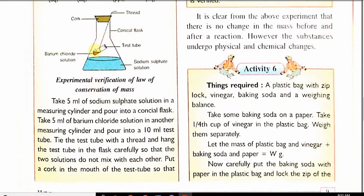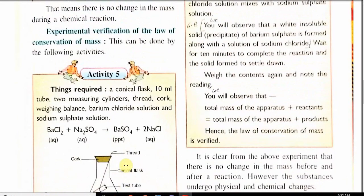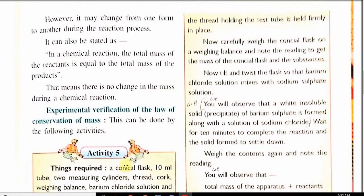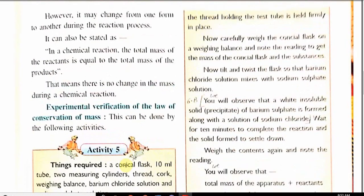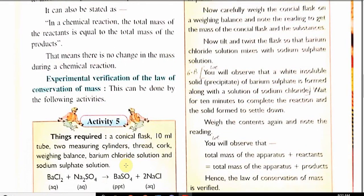You can see here this is test tube and this is the thread. Now put a cork in the mouth of test tube so that all the materials are safe there. Carefully weigh the conical flask and now tilt and twist the flask so that the barium chloride mixes with sodium sulfate solution.